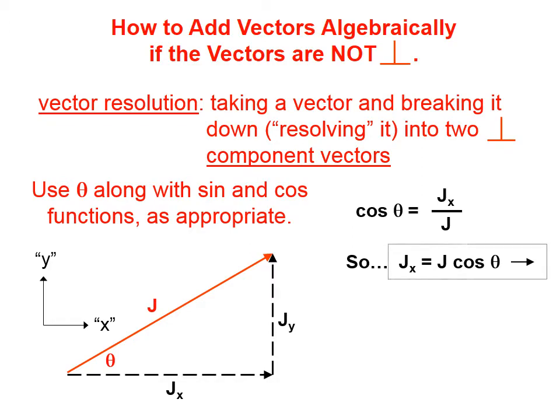Similarly, we would find the vector Jy in the same sort of way, except we would use the sine. The sine of this angle is equal to Jy divided by J, just like that. Multiply both sides of that expression by J, and you end up with Jy. So the first thing we've done here is we have resolved vector J into its x component and its y component.